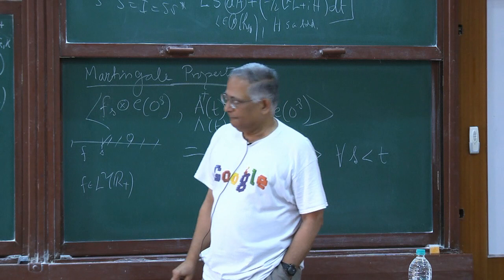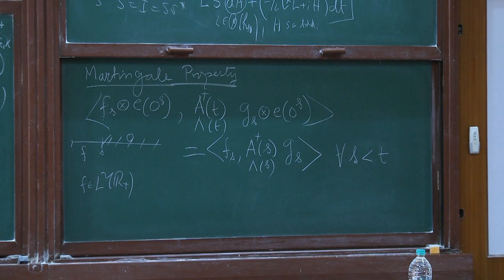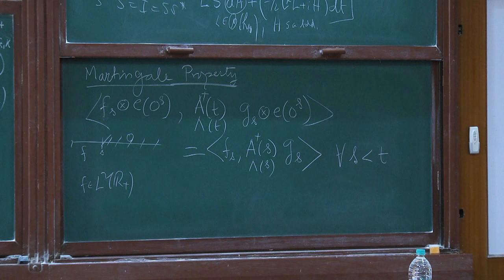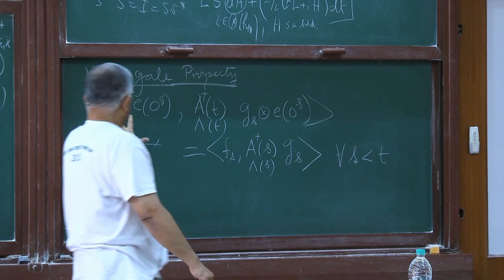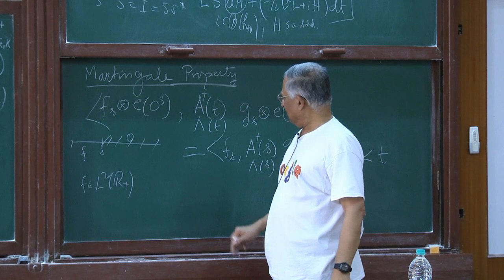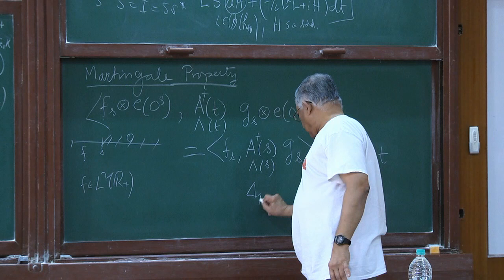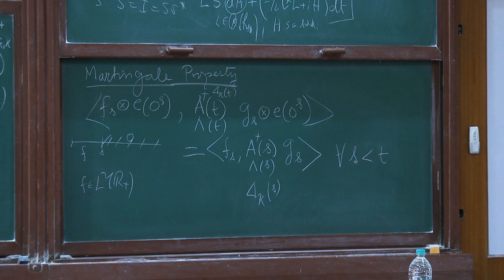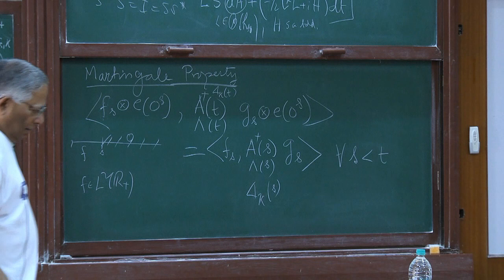All three satisfy this so-called martingale property, and so does the Gross-Laplacian — that is also quite elementary. Look at that double-integral expression, apply it with vectors of this type for t greater than s. So we have four martingales. Out of which three are of independent increment and one — the Gross-Laplacian δ_κ — is not. That is the distinct feature of the Gross-Laplacian.